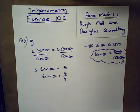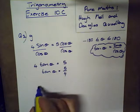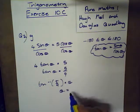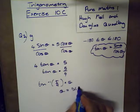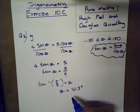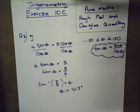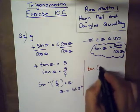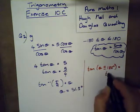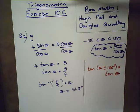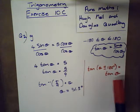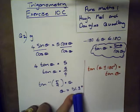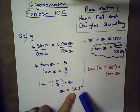So tan theta equals five over four. Now we need to find the inverse: tan inverse of five over four equals theta, and if I tap it into my calculator I get 51.3 degrees. This is only one part of the solution. We have to remember the identity for tan: tan(theta plus or minus 180 degrees) equals tan theta. We've got the interval negative 180 to 180 degrees, so we need to apply this rule.